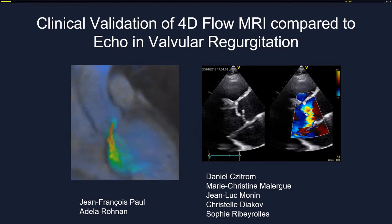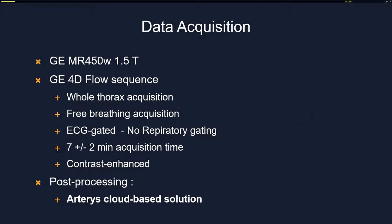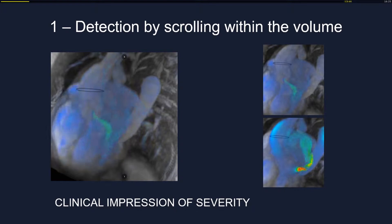Data acquisition was performed with a GE 1.5T machine using a 4D flow sequence, which is a whole thoracic acquisition with free breathing and without respiratory gating. The acquisition time is typically seven minutes and is contrast-enhanced, though with experience we need less and less contrast. Post-processing is done with the Arterys cloud-based solution.